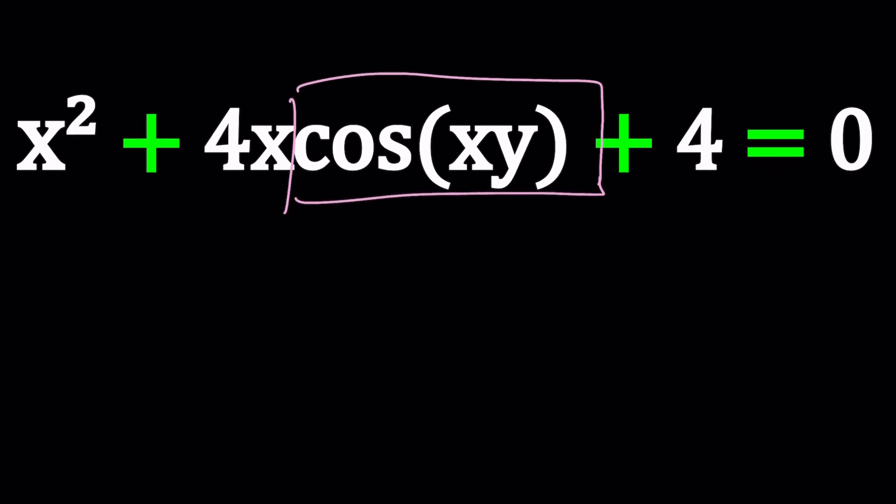Since x is squared and y is not, we're going to consider this a quadratic in x. So what is the coefficient of x then? The coefficient of x in this case happens to be 4 cosine xy. Even though it contains an x, that's okay. In some cases, this works.